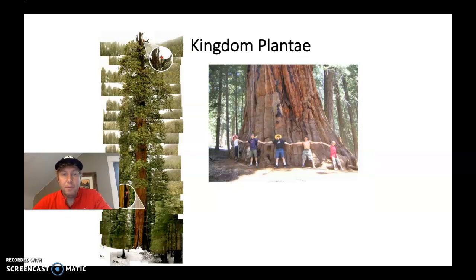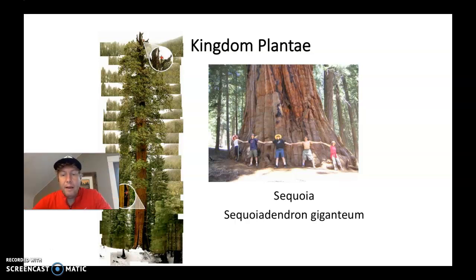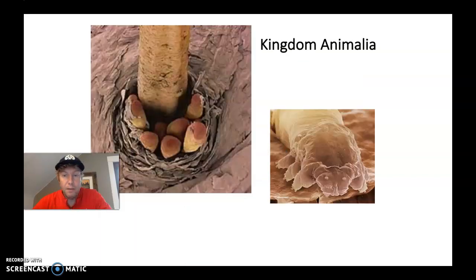Kingdom plant — here are some huge redwood trees out in California. Hopefully they're not burned down; there's a lot of fires there right now. There are millions of different species of plants and they're all grouped under the big umbrella of the kingdom Plantae. The scientific name for this type of tree is Sequoiadendron giganteum — old and beautiful.